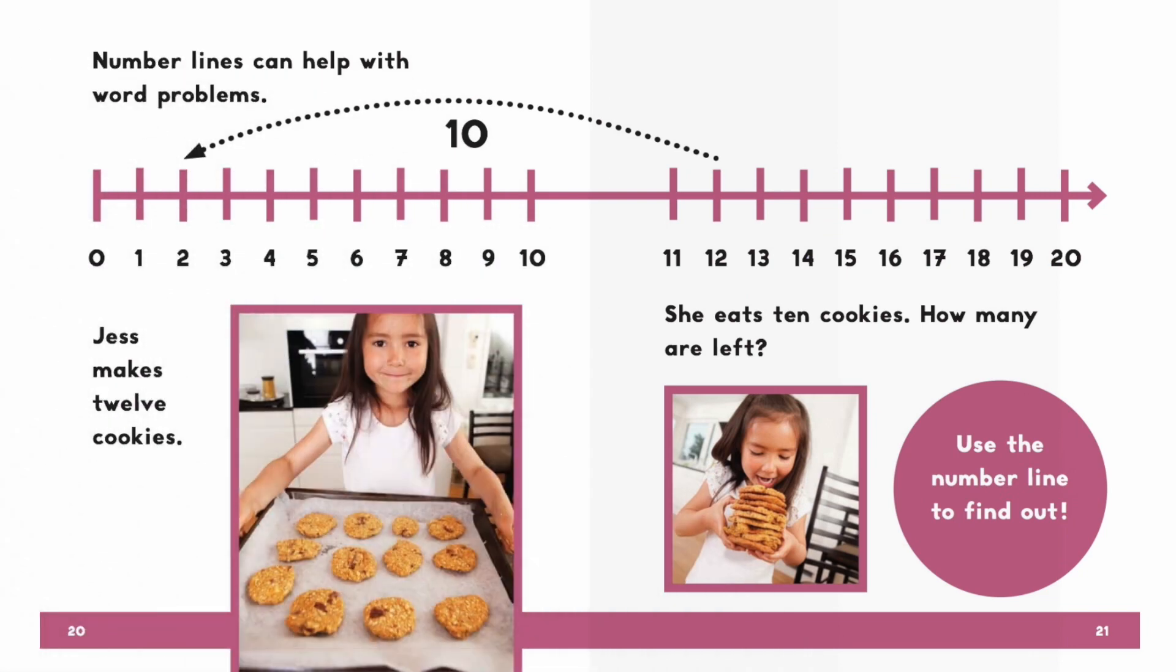Number lines can help you with word problems. Jess makes 12 cookies. She eats 10 cookies. How many are left? Use the number line to find out.